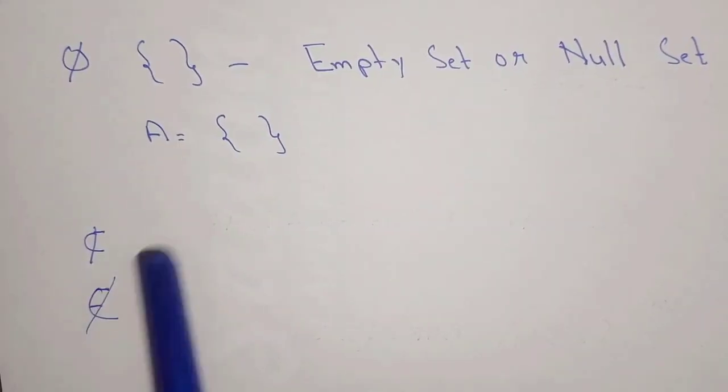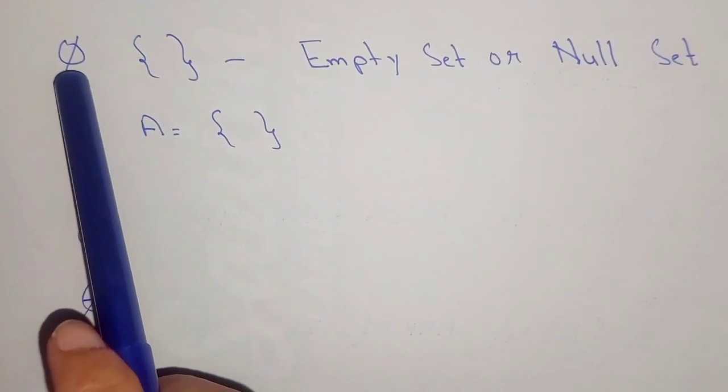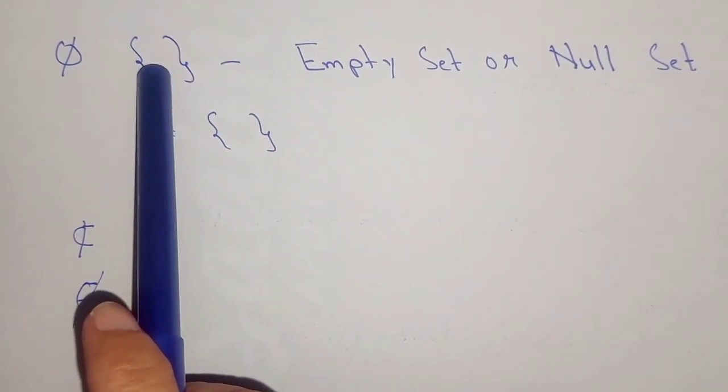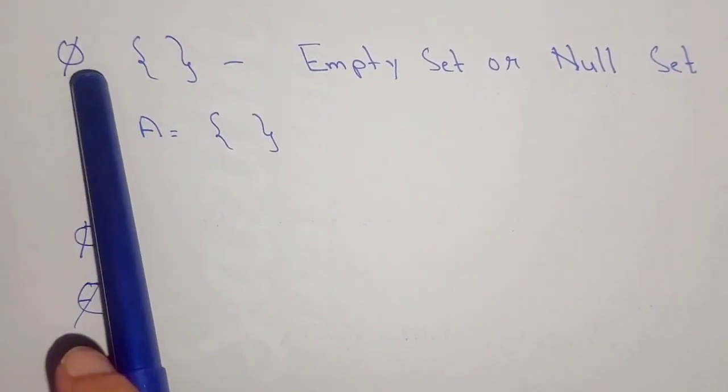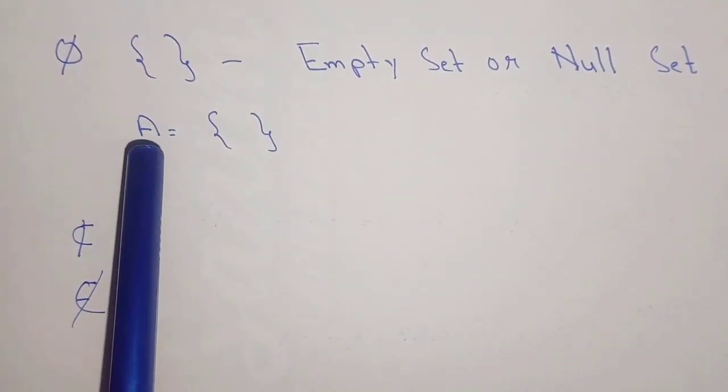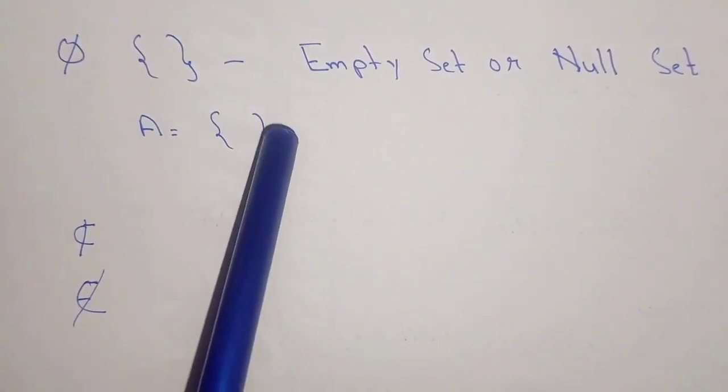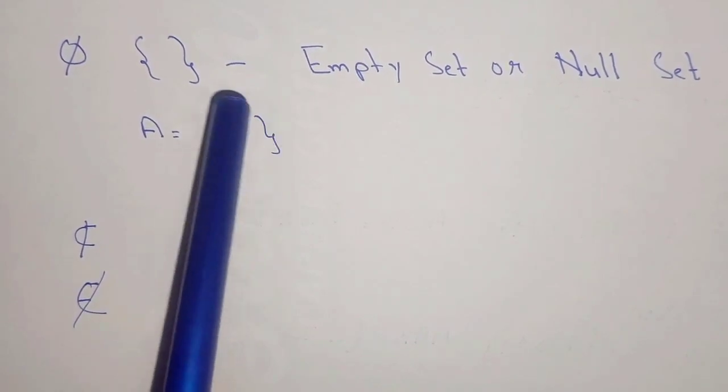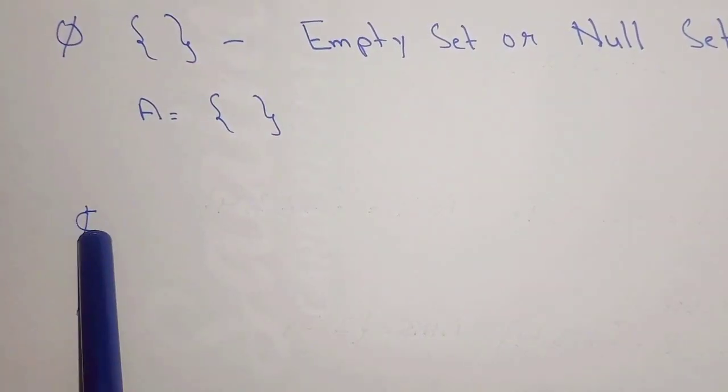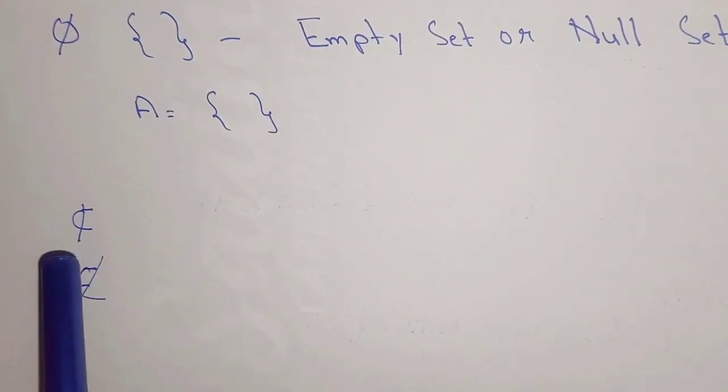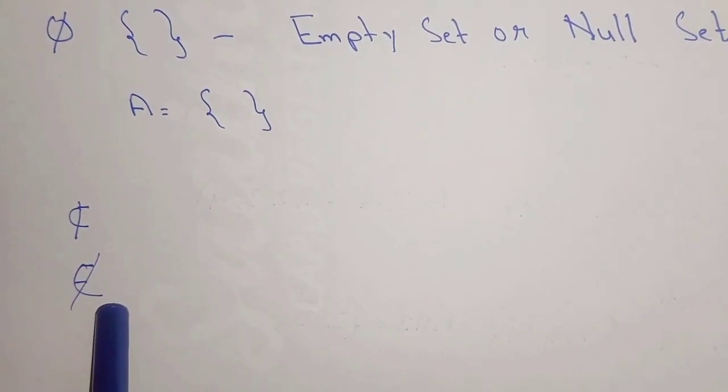Another notation is φ or {}, the empty set or null set. We can write A = {}, with no elements inside the set. There's also the notation for not a subset and not an element.